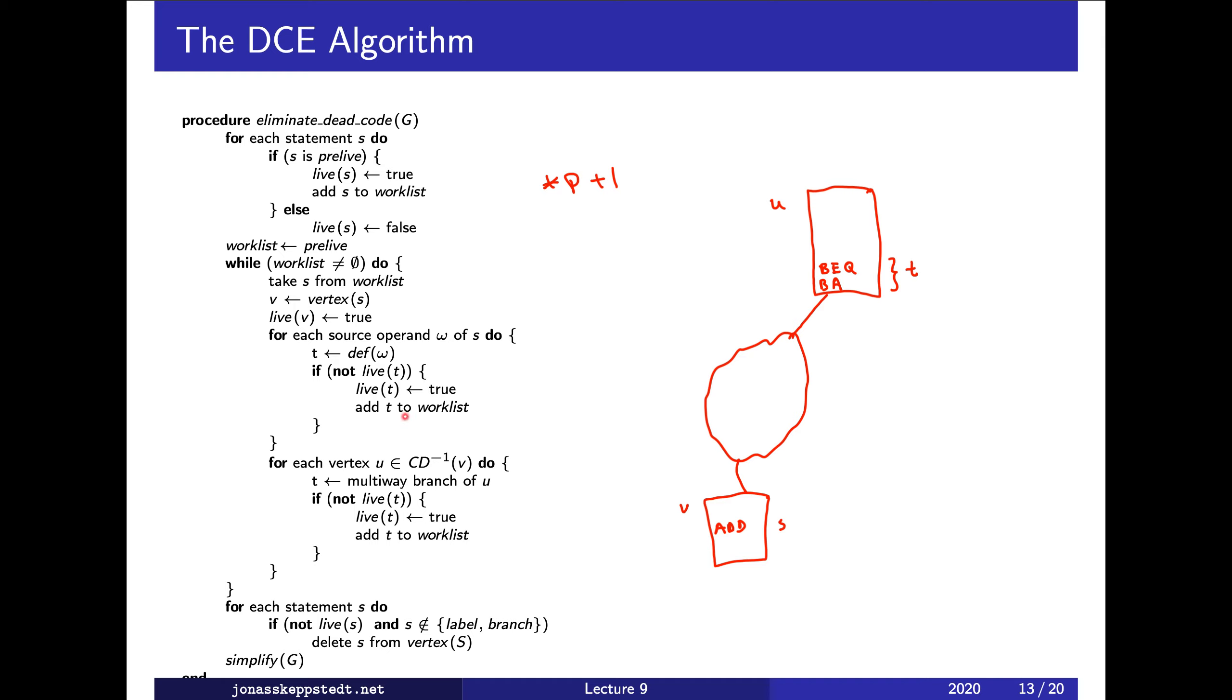We need to mark not only the conditional branch, but all conditional branches which decide that v will be executed. That means conditional branches in vertices on which v is control dependent should also be marked as live. In this case, v is control dependent on u, and u has a multi-way branch.